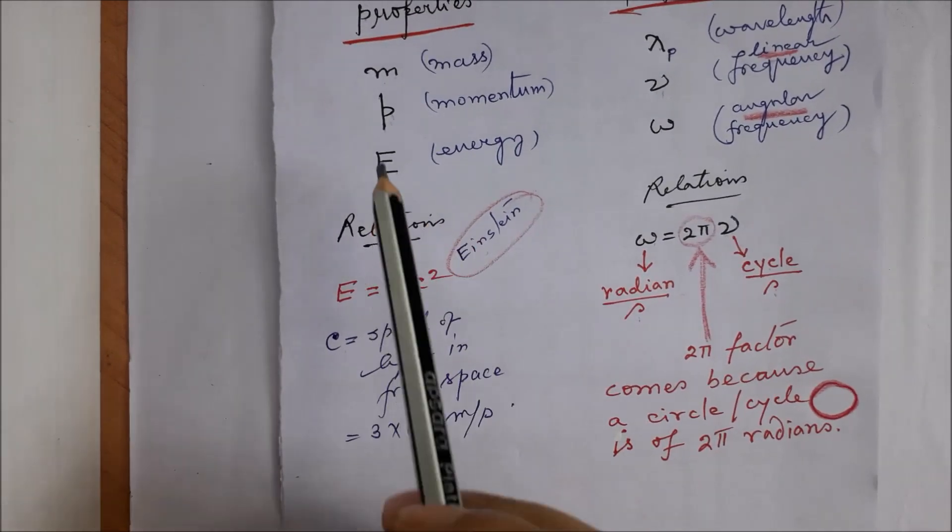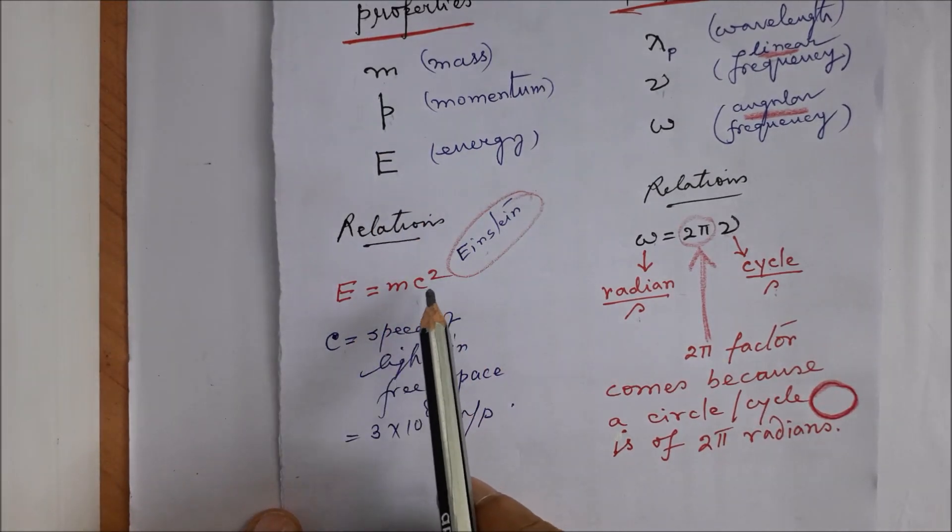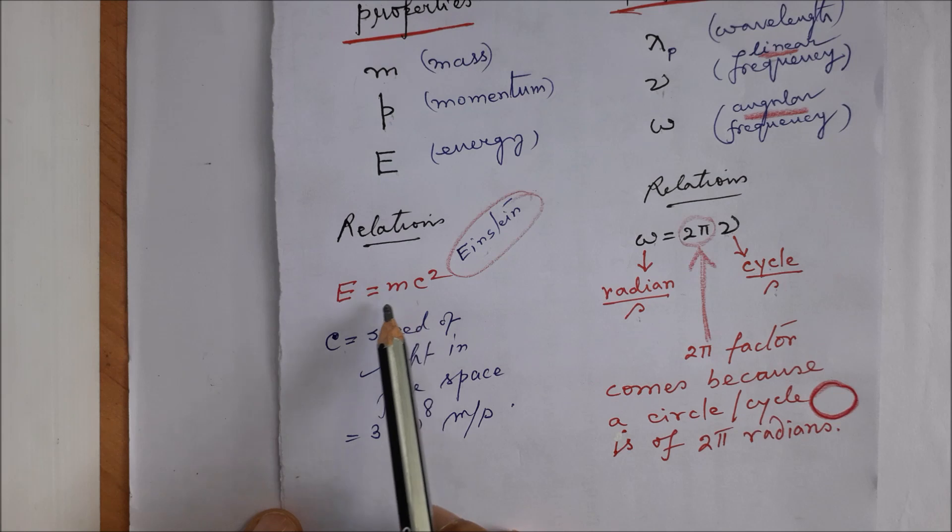And they are related by this equation ω = 2πν. ω represents radians per second and ν represents cycles per second, and the factor 2π is there because a circle or a cycle is of 2π radians. And on this side, how are E and m related? E and m are related by Einstein's famous equation E = mc², where c is the speed of light in free space, 3×10^8 meters per second.